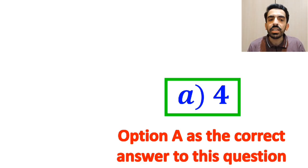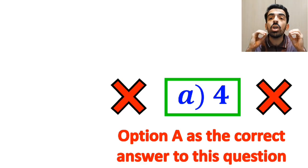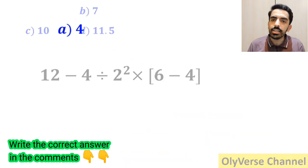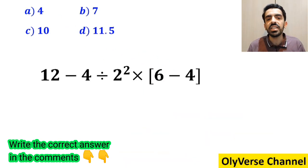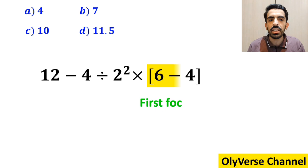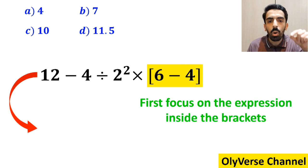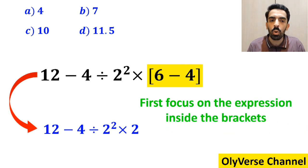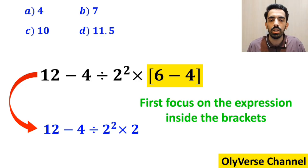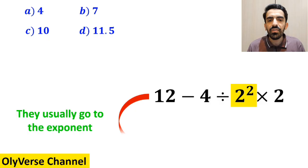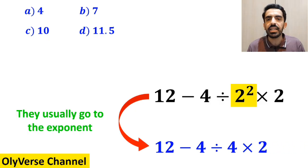But I have to say, we were tricked — it's not the correct answer to this question. Also, some other people, when solving this question, first focus on the expression inside the brackets, and replace the whole expression with 12 minus 4 divided by 2 squared multiplied by 2. In the next step, they usually go to the exponent, and simplify it to 12 minus 4 divided by 4 multiplied by 2.